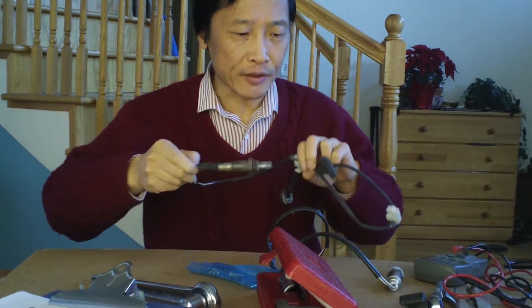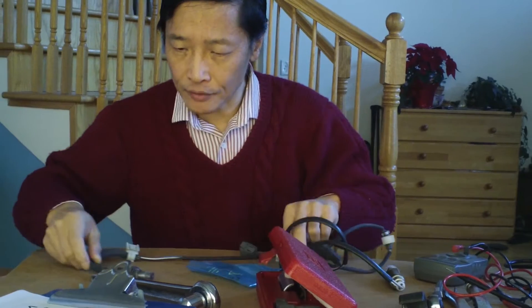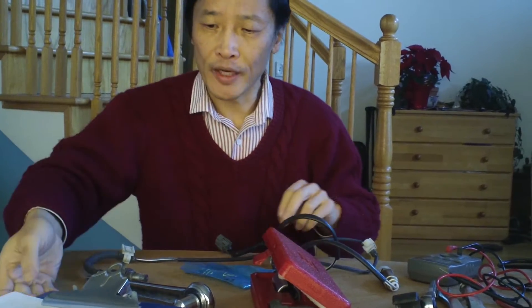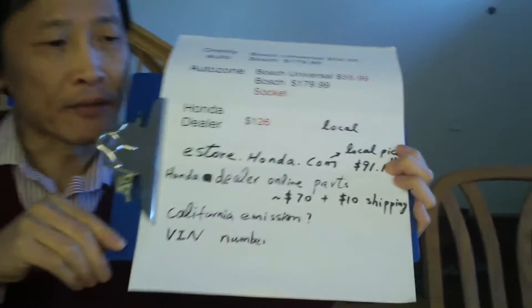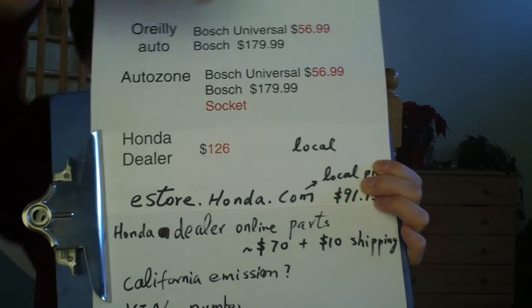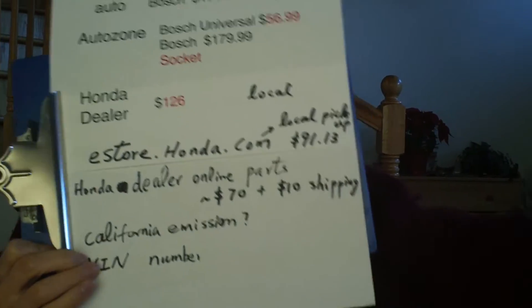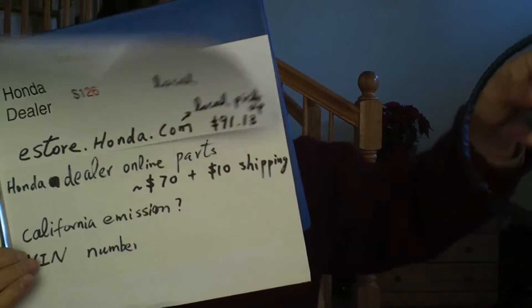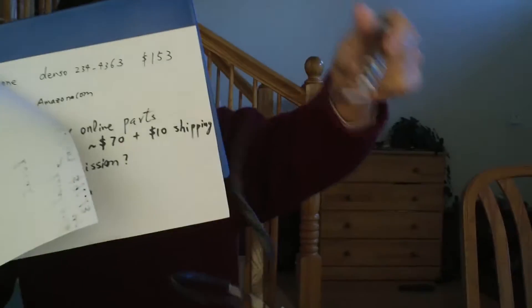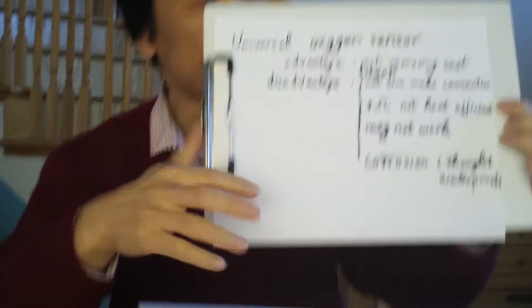So the next question is if you replace the oxygen sensor, where do you get it? Two options, one is use a generic third party, which is cheaper. And I got that part here, a Bosch. So it's pretty short, like this short. So you have to cut the wire, make the connection. The advantage and disadvantage are comparison, you can see from here.